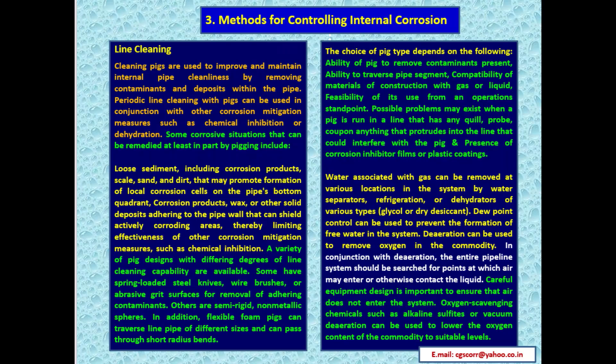The third important category is methods for controlling internal corrosion. Line cleaning: cleaning pigs are used to improve and maintain internal pipe cleanliness by removing contaminants and deposits. Periodic line cleaning with pigs can be used in conjunction with other corrosion mitigation measures such as chemical inhibition or dehydration. Corrosive situations remedied by pigging include: loose sediment (corrosion products, scale, sand, and dirt) that may promote local corrosion cells on the pipe's bottom quadrant; and corrosion products, wax, or solid deposits adhering to pipe walls that can shield actively corroding areas, limiting effectiveness of chemical inhibition.